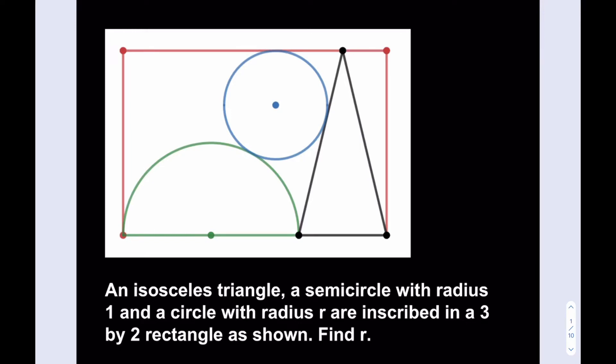Hello everyone. In this video, we're going to be solving an awesome geometry puzzle. An isosceles triangle, a semicircle with radius 1, and a circle with radius r are inscribed in a 3 by 2 rectangle as shown. Find r.